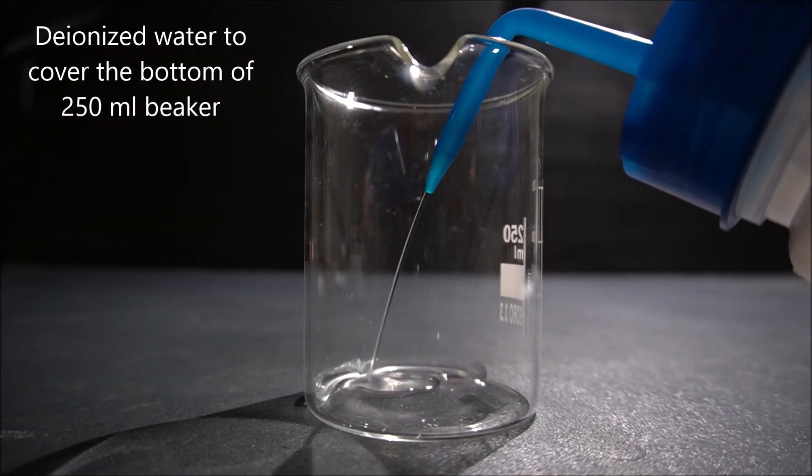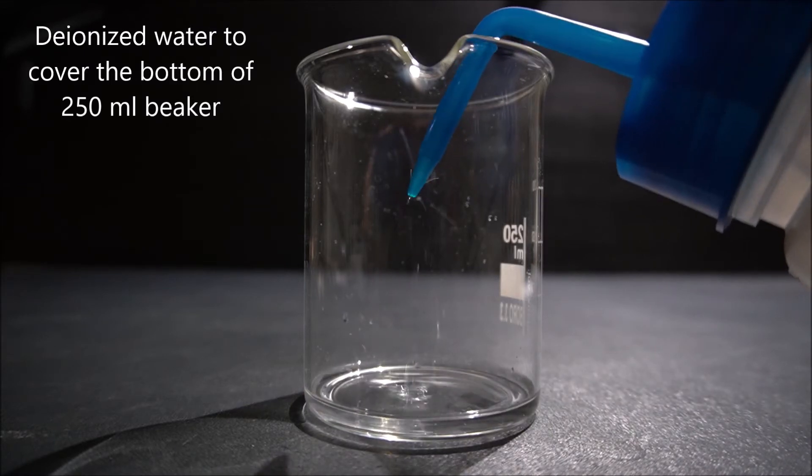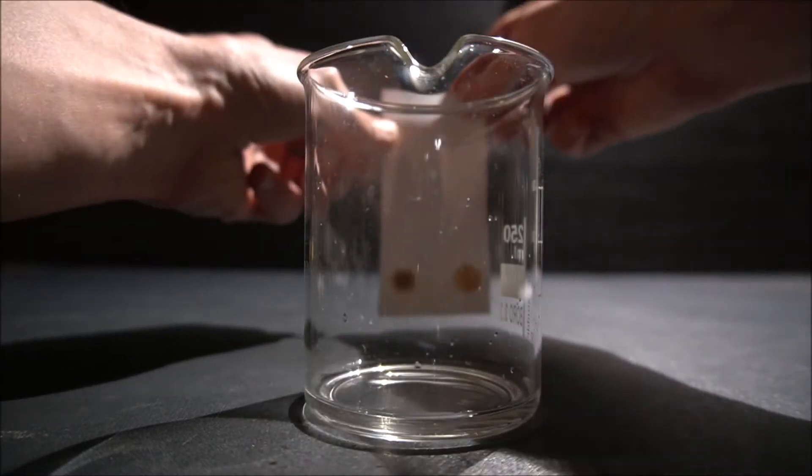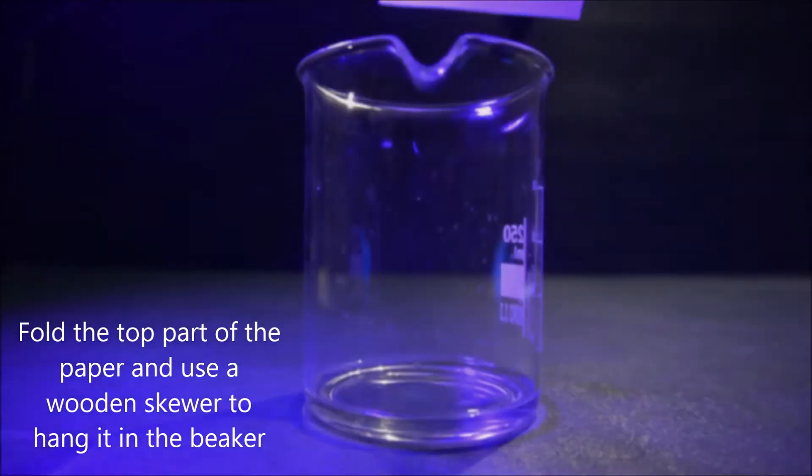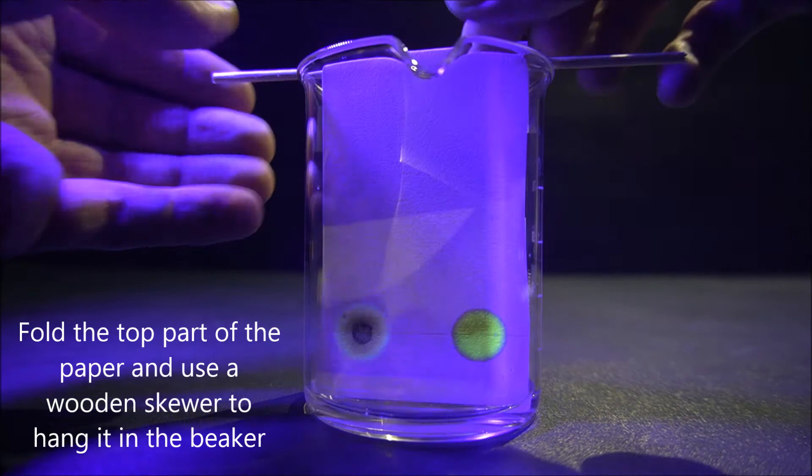Add just enough distilled water to completely cover the bottom of a 250 milliliter beaker. Fold the top part of the paper and use a wooden skewer to hang it in the beaker, with the bottom edge just immersed in water.